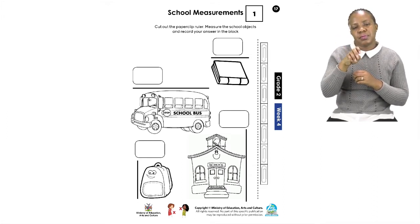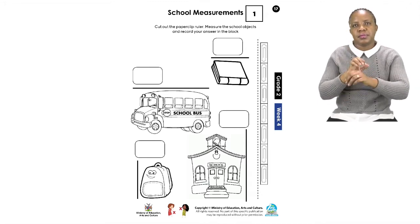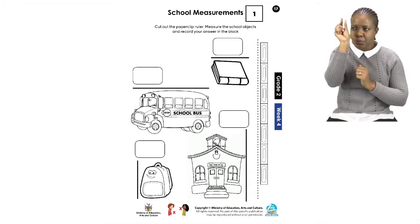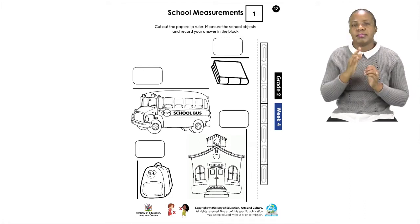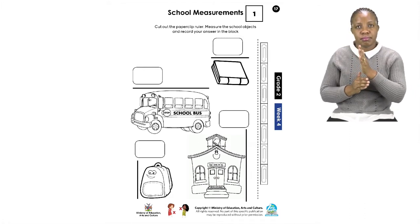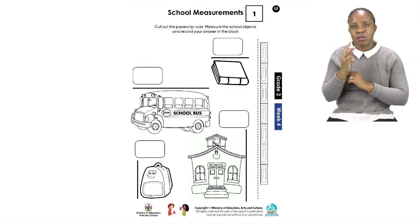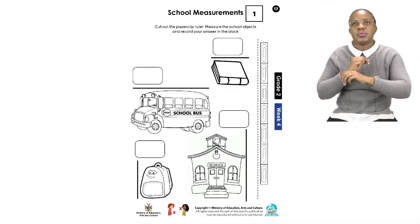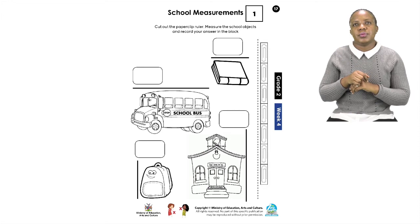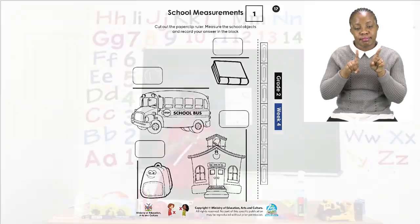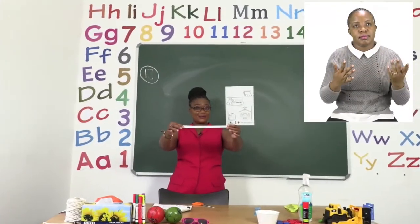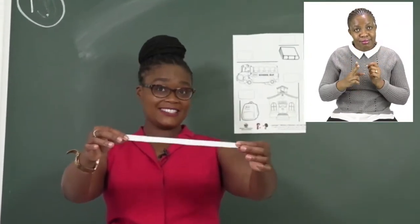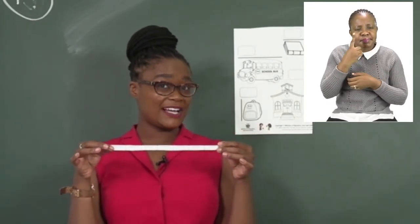After measuring the objects, you are going to write your answer in the block. On the other side, we have a ruler made up of paper clips. You are not supposed to cut the paper clips, but you are going to cut out the ruler, just like I have done here in the classroom. I have cut out my ruler — this is the paper clip ruler, and I did not cut in between.